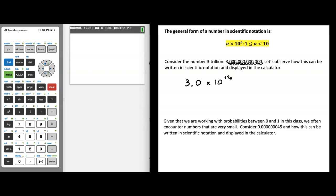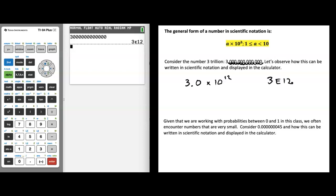Your calculator does something really cool. When you put really large or really small numbers into it, your calculator will many times give you that result in scientific notation, but the formatting might look a little different. The calculator presents this as 3E12. I want you to know that when you see something like 3E12, that is exactly the same as 3 times 10 to the 12th.